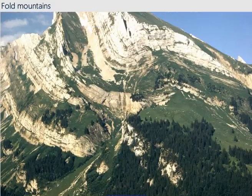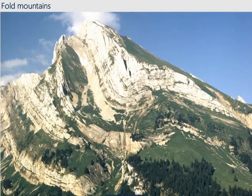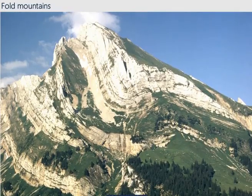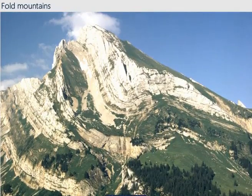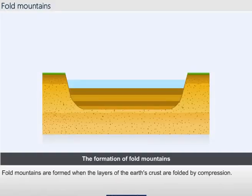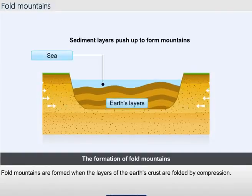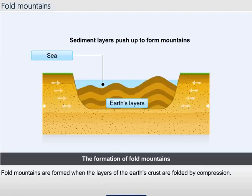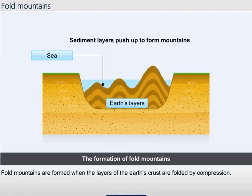Fold Mountains. Fold mountains are formed when the layers of the earth's crust are folded by compression.